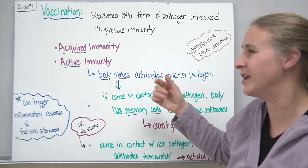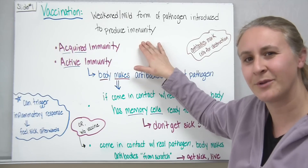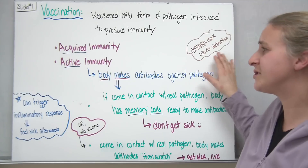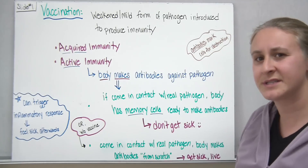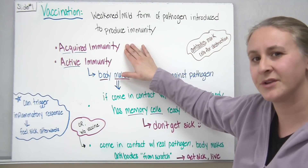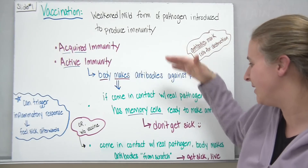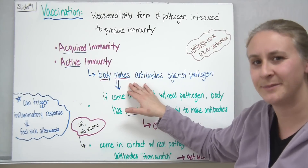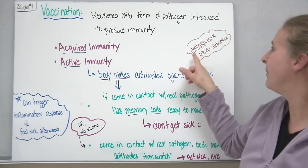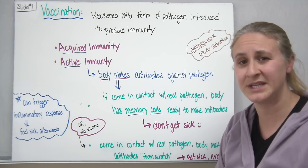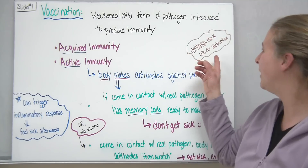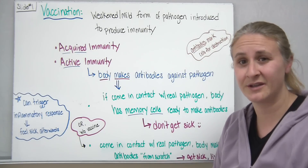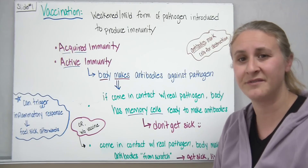Immunity is what helps to protect our body and keep it healthy. We have two different types of immunity: acquired immunity and active immunity. With active immunity, the body makes antibodies against a pathogen. Antibodies are specific types of y-shaped proteins that help to mark cells for destruction, and each antibody is specific for the particular pathogen it's trying to kill off based on its shape.